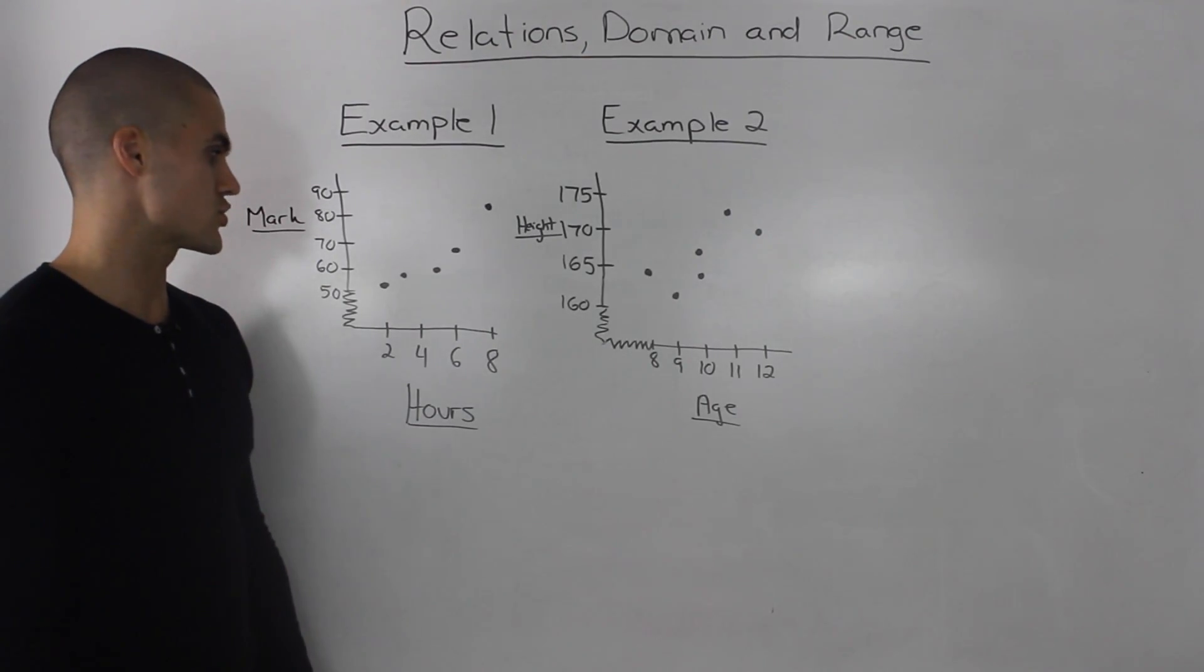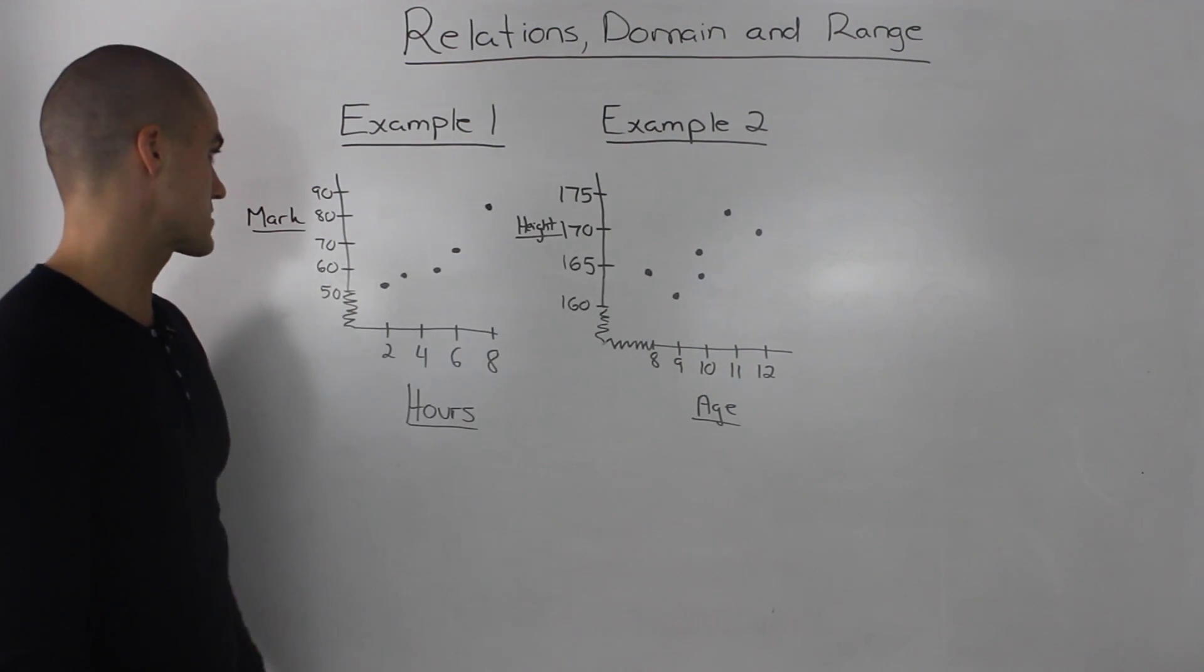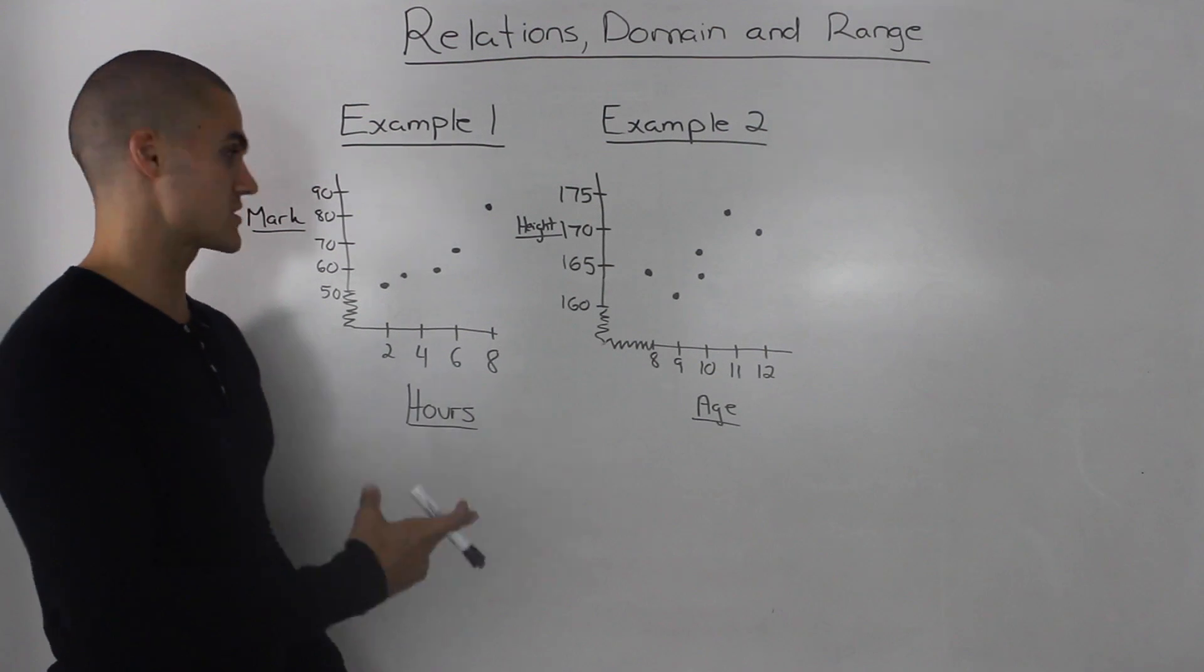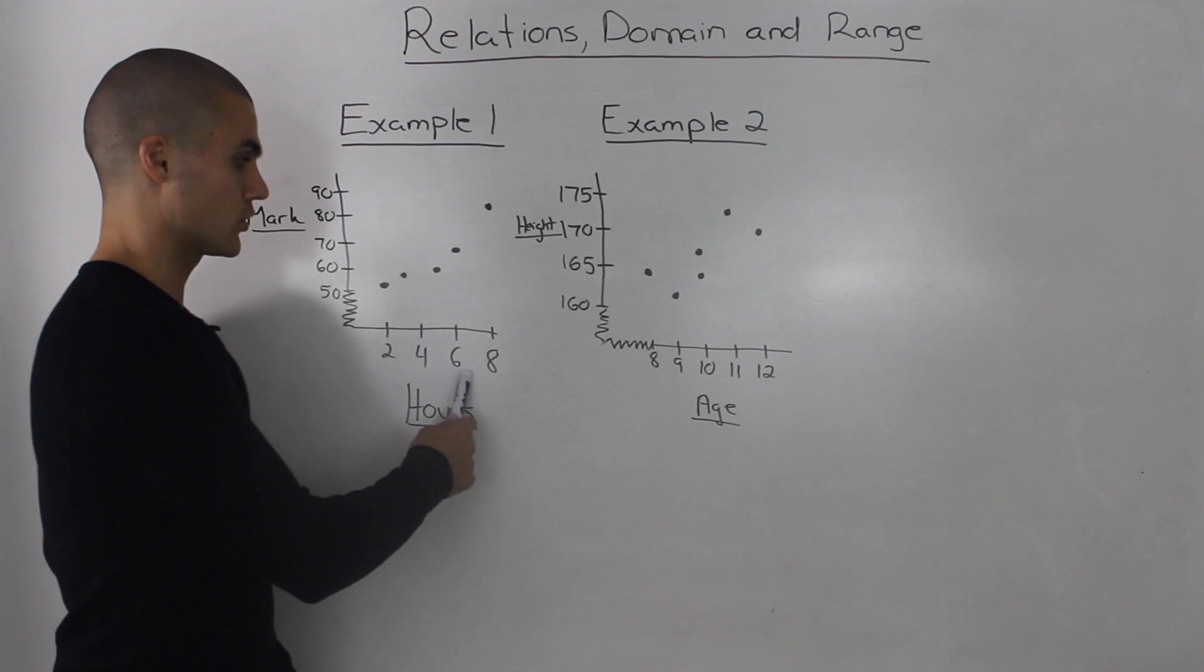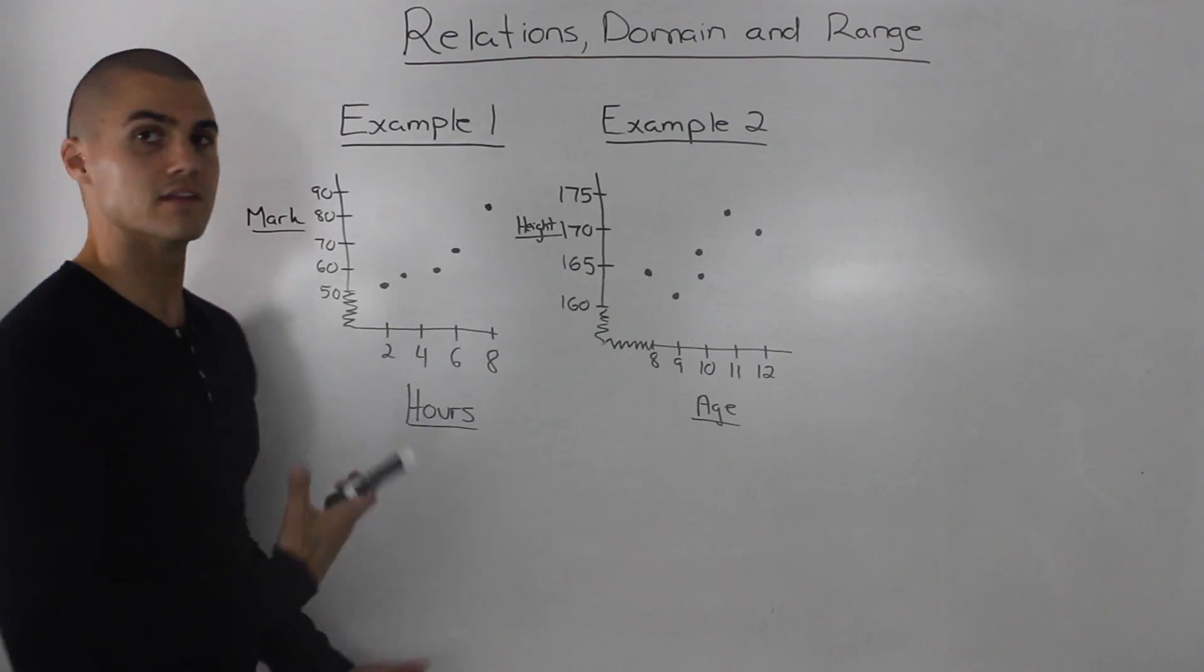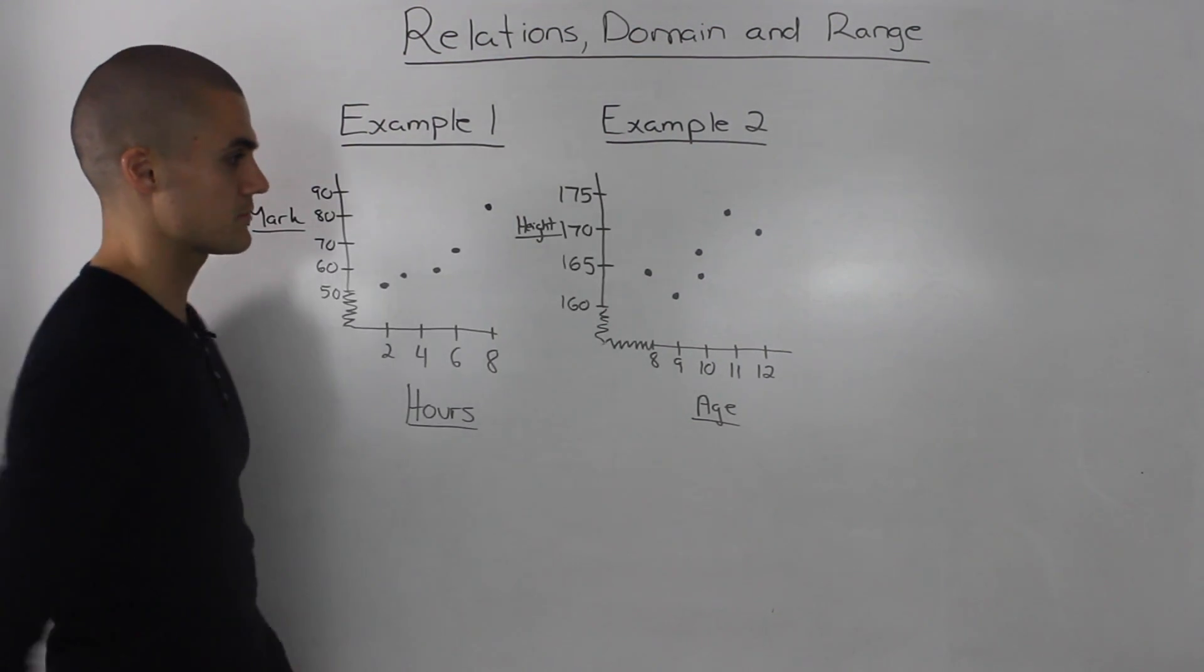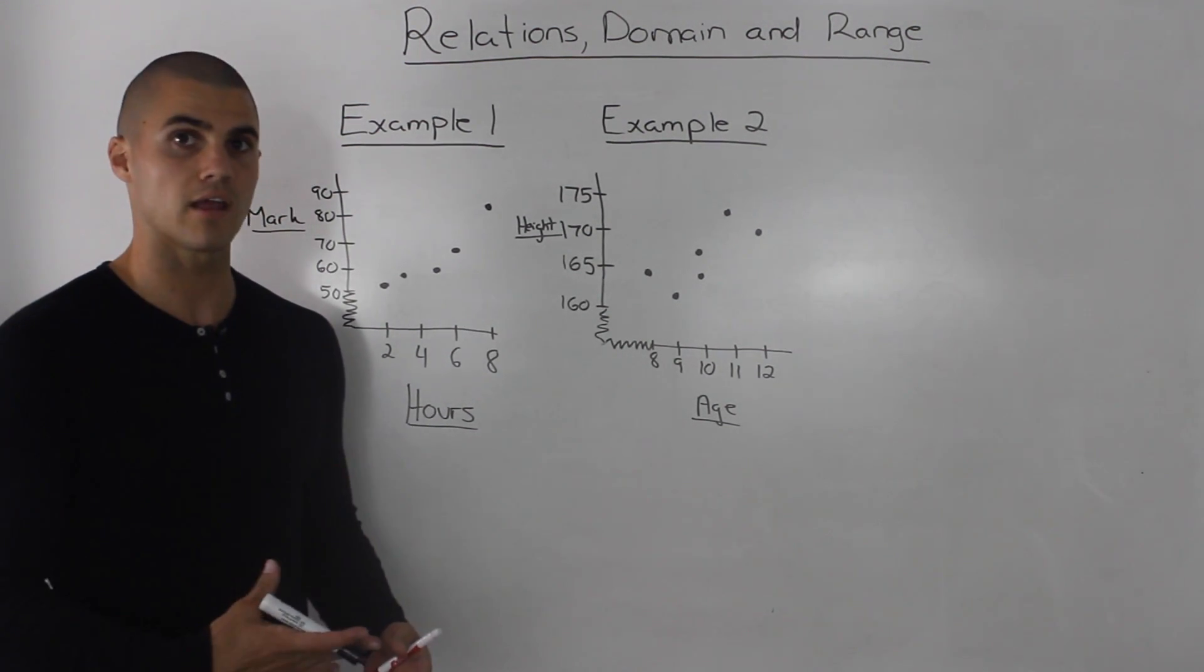The fourth and final way to show a relation is through a graph. I had to erase the other three ways just to give myself some extra room, but just add this to your notes. I took the table of values from both examples and just plotted the points. Remember, the independent variable goes on the x-axis—the hours and the age respectively. The dependent variable goes on the y-axis—the mark in example one and the height in example two.